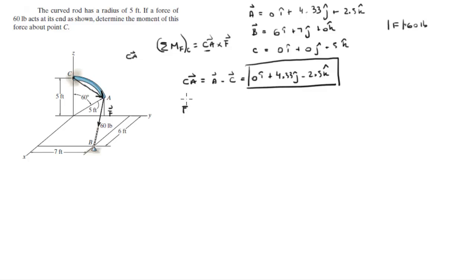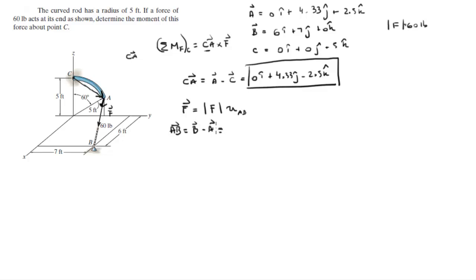Now we need to find the Cartesian vector form of F, which is given by the magnitude of F times a unit vector going from A to B. A unit vector has a magnitude of 1. To find unit vector UAB we need vector AB, which is B minus A, giving us 6i plus 2.67j minus 2.5k.